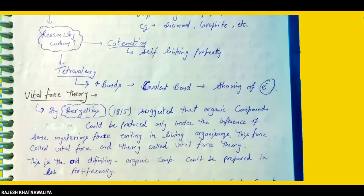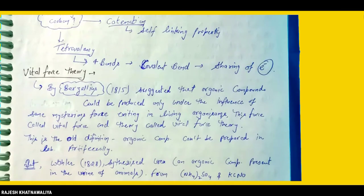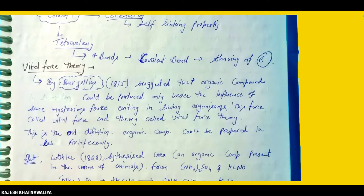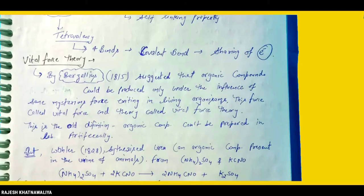The old definition stated that organic compounds could not be prepared artificially in the laboratory. However, in 1828, a scientist named Wohler successfully prepared urea, an organic compound, in the laboratory, thus disproving the vital force theory.